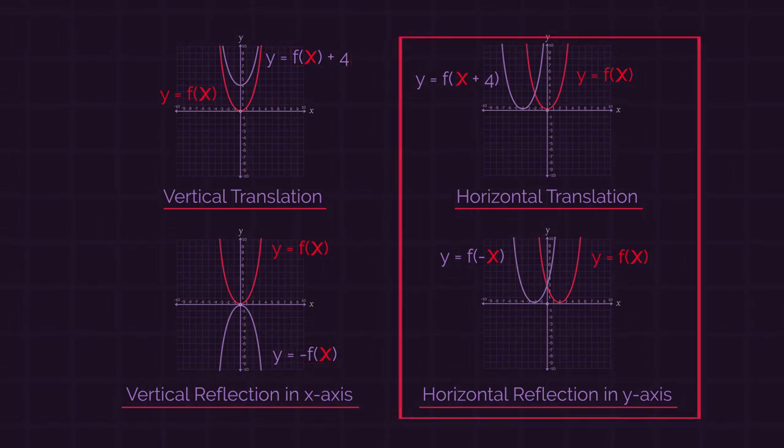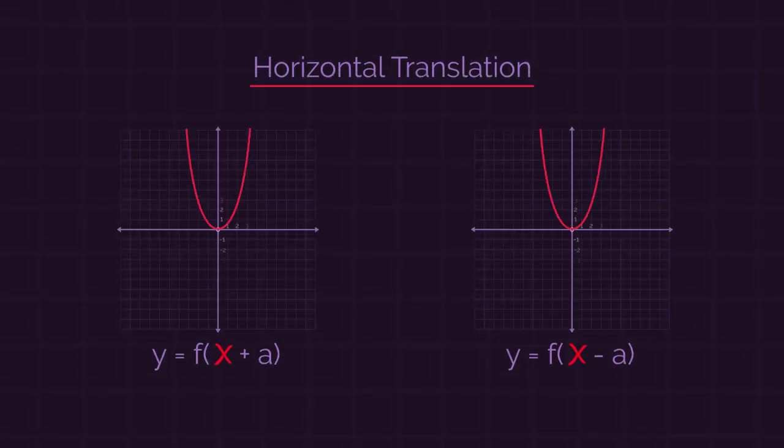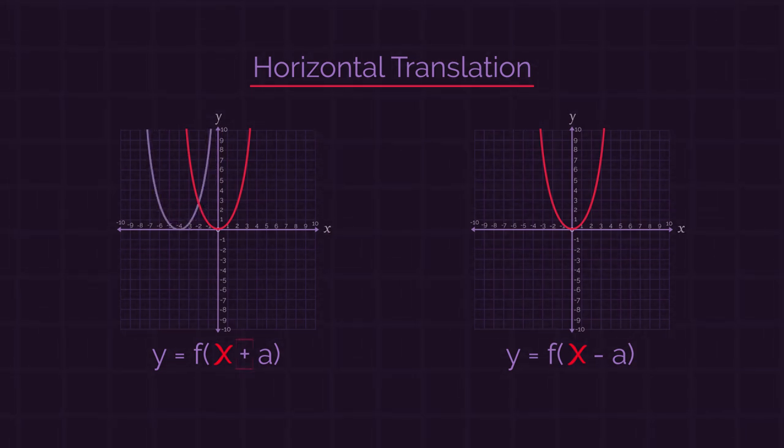Whereas for horizontal transformations, we apply the transformation to the x's. And also we discovered that for horizontal translations, adding shifts the curve to the left, and subtracting shifts the curve to the right.